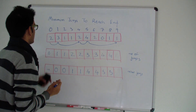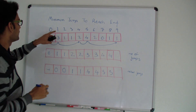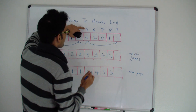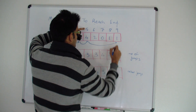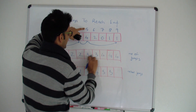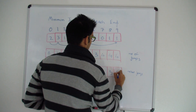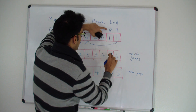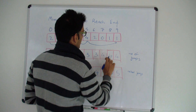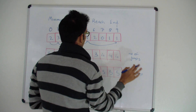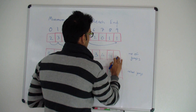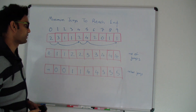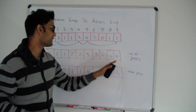Finally for i equals nine: from zero you cannot reach nine. From one, no. From two, no. From three, no. From four, no. From five? Yes — from five you can reach nine directly. The minimum number of jumps to reach nine is whatever it takes to reach five, which is three, plus one — so four. We indicate reaching nine from five. From six you cannot reach nine. From seven you cannot. From eight you can reach nine, but that would be four plus one, which is five — not better than four. So four is the final answer.